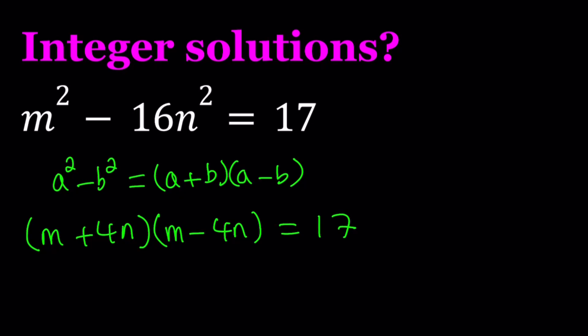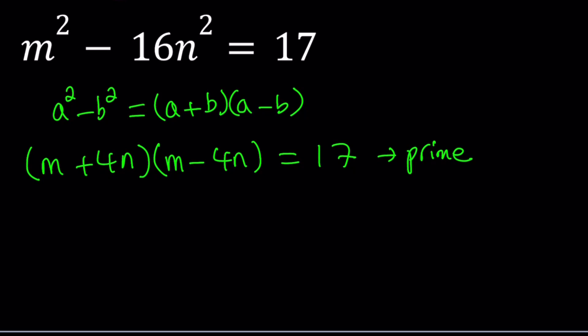So 17 is a prime number, which is good, because prime numbers can only be factored in a certain way, which is 1 times 17. So here's what it means. We have two factors, and that equals 17, and m and n are integers.